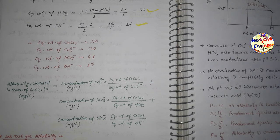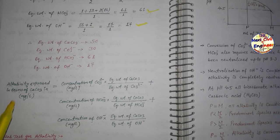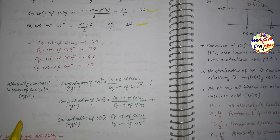The lab test for alkalinity: take a water sample, add an indicator (phenolphthalein or methyl orange), then titrate with 0.02 N H₂SO₄ from a burette. The principle is: 1 mL of 0.02 N H₂SO₄ neutralizes 1 mg of alkalinity as CaCO₃. In alkalinity tests, phenolphthalein is the basic indicator and methyl orange is the acid indicator.